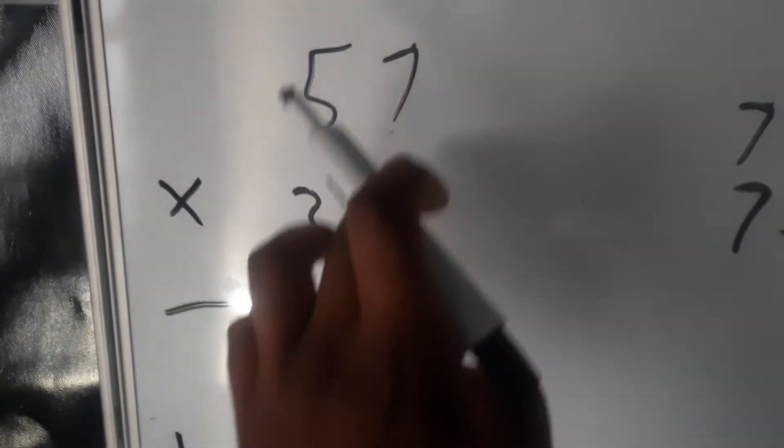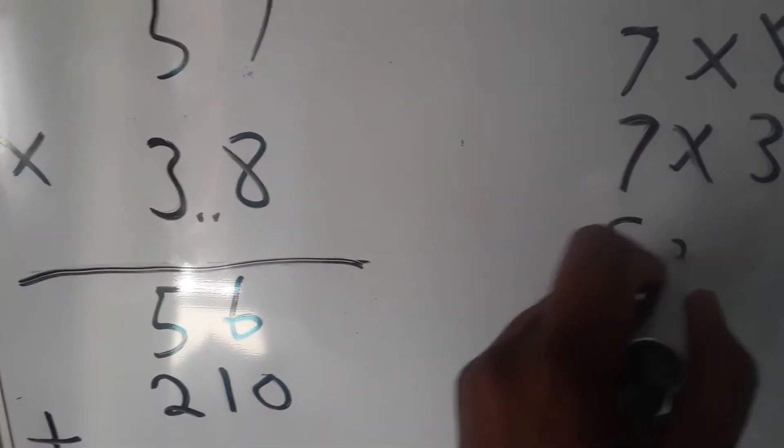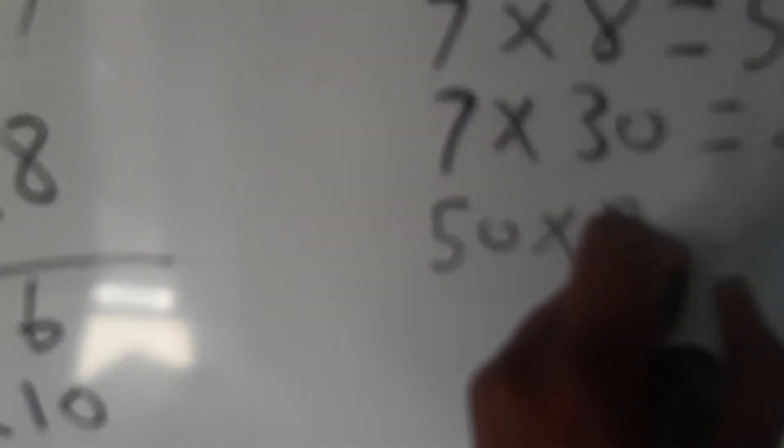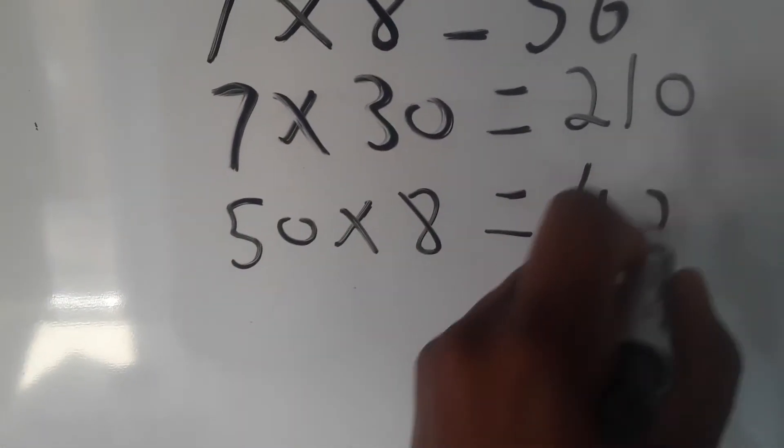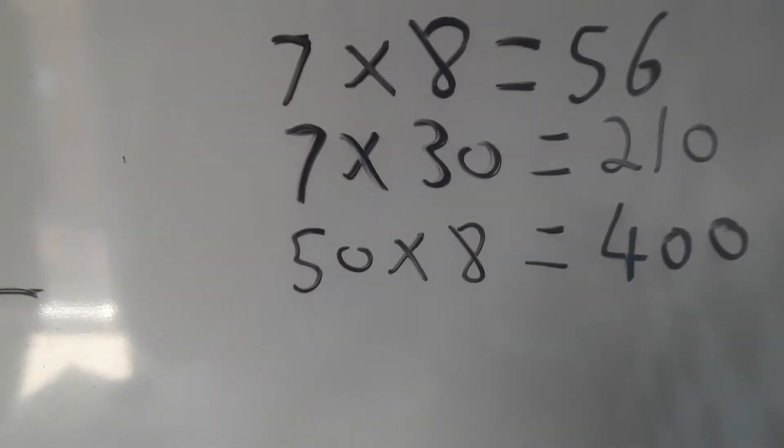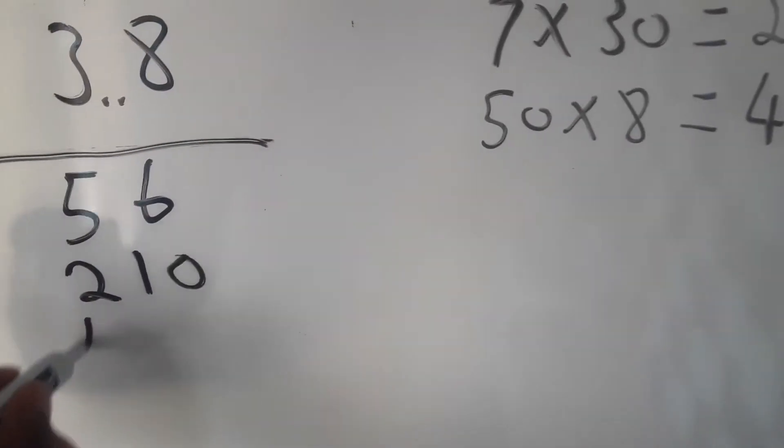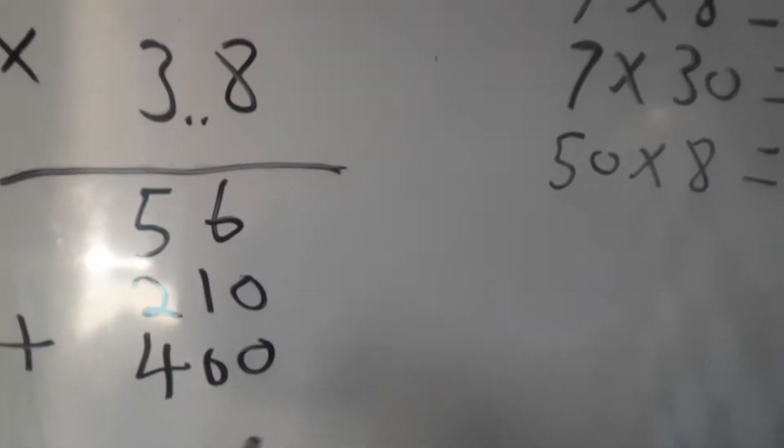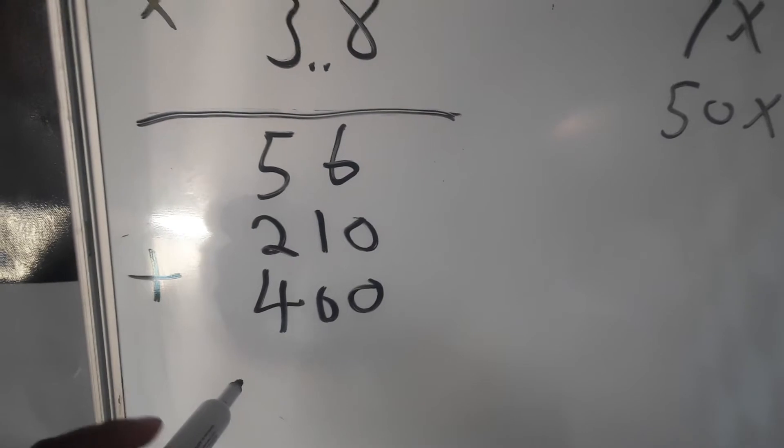50 times 8, because we are done with the 7. It's gonna be 50 times 8 which is gonna give us 400. Times 10 it's 500, then we're gonna have the 400 here.